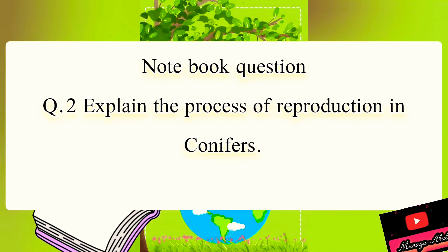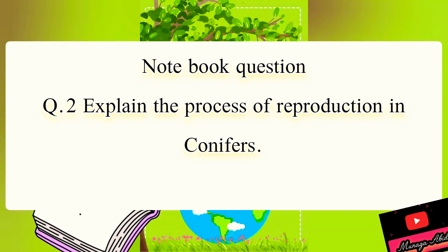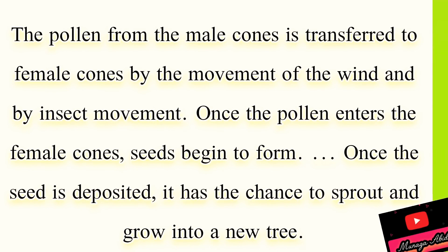Pencils and notebooks at the ready. We're going to write question number two: explain the process of reproduction in conifers. The correct answer: the pollen from the male cone is transferred to female cones by movement of the wind and by insect movement. Once the pollen enters the female cones, seeds begin to form. Once the seed is deposited, it has the chance to sprout and grow into a new tree.